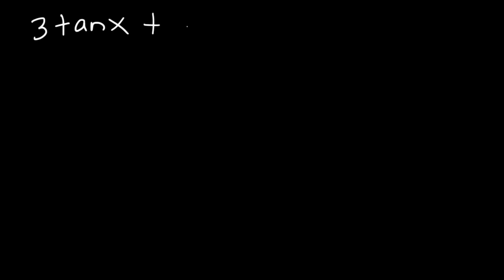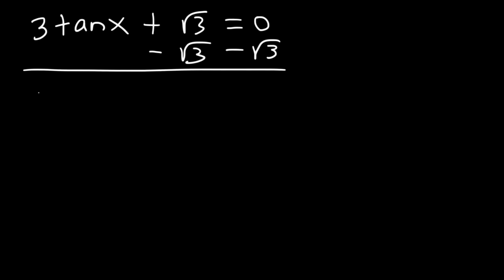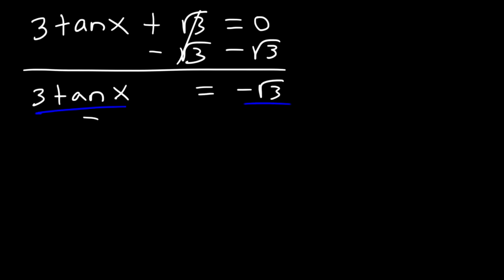Here's another one: 3 tangent x plus √3 equals 0. Find all solutions — that means you want to write your answer with n. First, subtract √3 from both sides: 3 tan x = -√3. Then divide both sides by 3, giving tangent x = -√3/3.